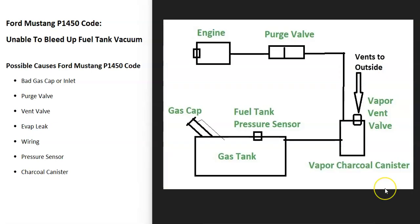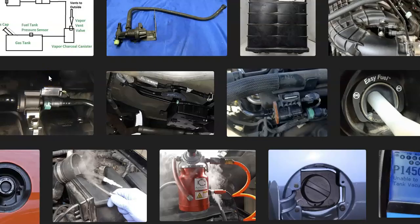If you go through everything and can't find any leaks and all the components test good, the next thing to check is the fuel tank pressure sensor. This sensor reports back to the computer what's going on inside the system. If it fails, there might not actually be a problem in the system, but the computer thinks there is because the pressure sensor is sending out bad data. If you test everything else and can't find any issues, go check that fuel tank pressure sensor.